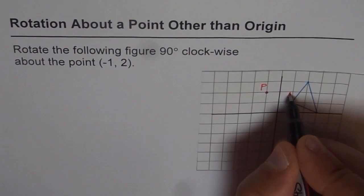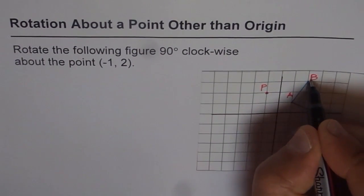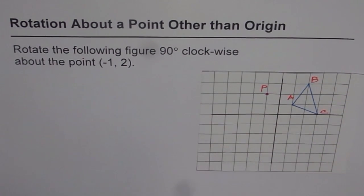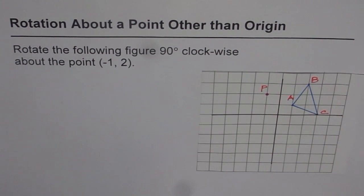So let me say this point is A for us and then this point is B and this is C for us. So that's the object A, B, C.